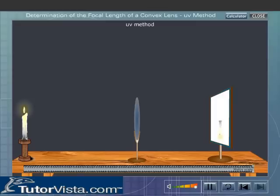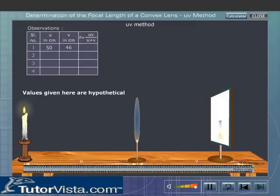Measure and record the distance between the lens and the object and also the distance between the screen and the lens. Repeat the experiment by changing the position of the lens and then the screen until a sharp, well-defined image of the candle is formed on the screen.